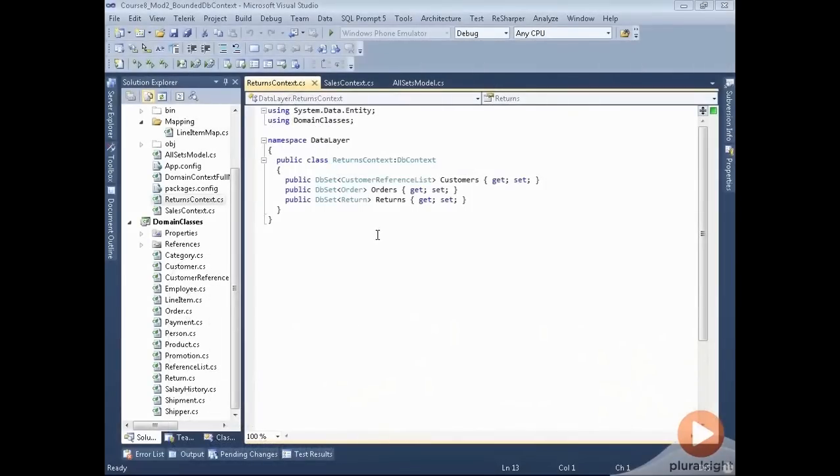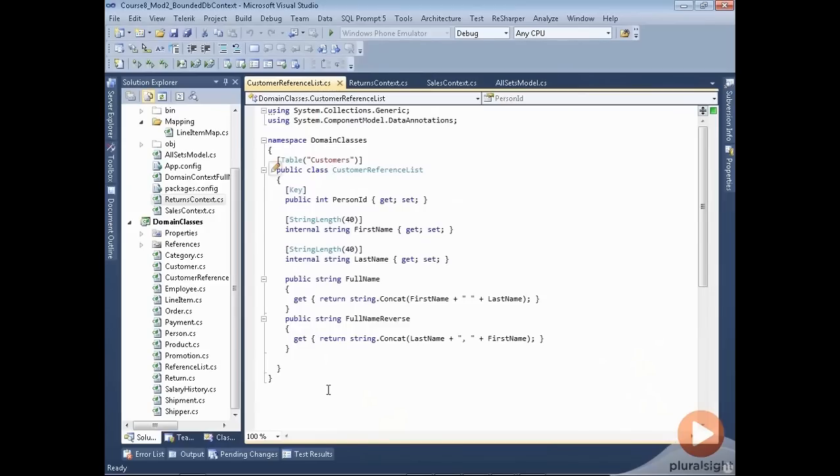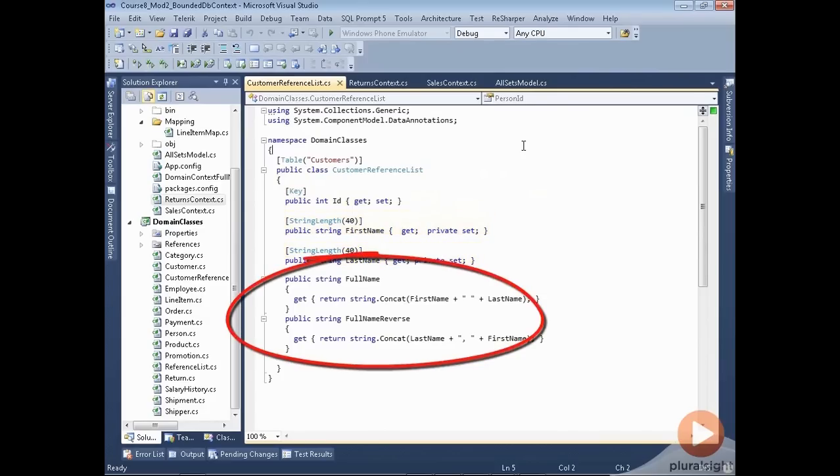Why not just have a customer class defined that matches what the domain requires? That's what this customer reference list is. We take a look at the declaration for that. Customer reference list does have the key for the customer. It has the first name and the last name, and it has two fields that give us back the full name as first name, last name, and another property that gives us back a reverse of the full name, last name, comma, first name.